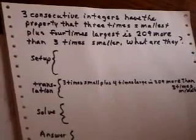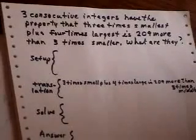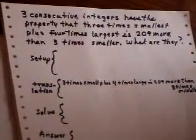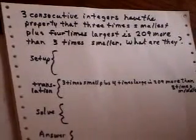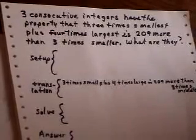Welcome to your next one. Here we have more than one unknown. We have three consecutive integers and they have the property that three times the smallest plus four times the largest is 209 more than three times the smaller. What are the numbers?